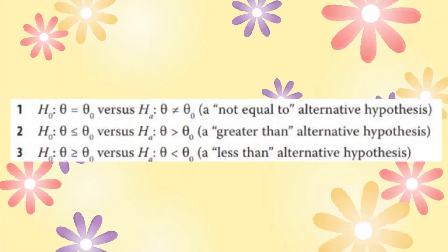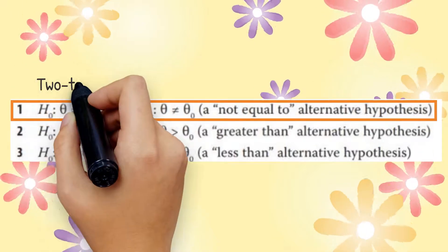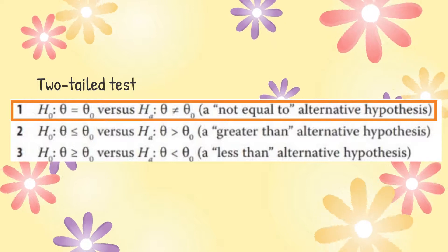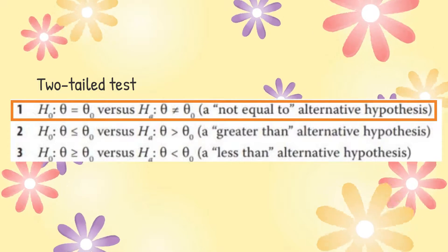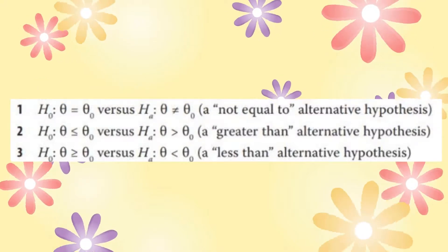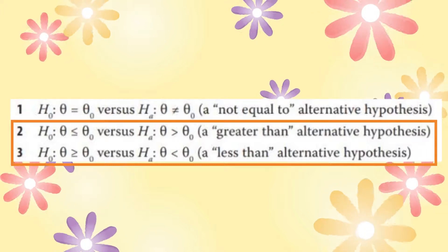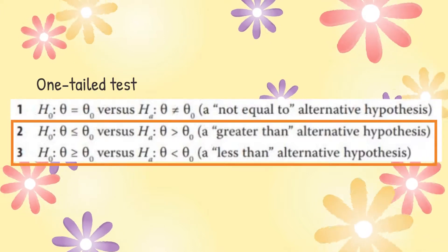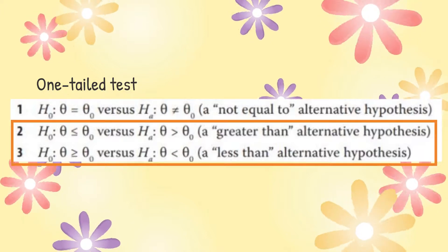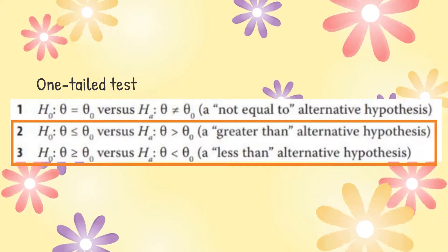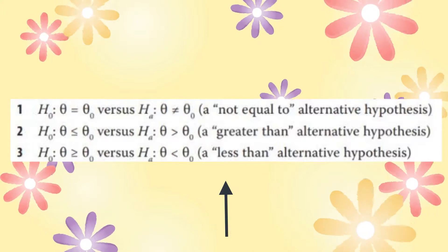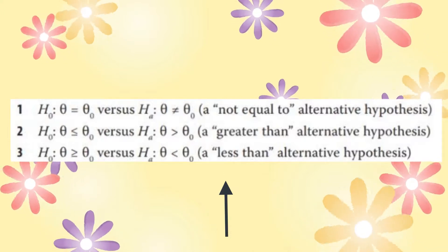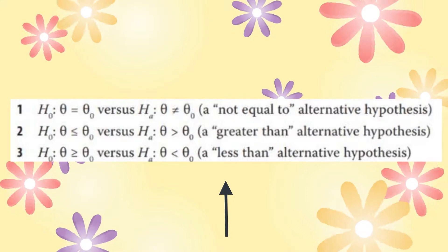We can formulate the null and alternative hypotheses in the following three ways. The first formulation is a two-sided hypothesis test or a two-tailed hypothesis test — we reject the null in favor of the alternative if the evidence indicates that the population parameter is either smaller or larger than theta 0. In contrast, formulations 2 and 3 are each a one-sided hypothesis test or a one-tailed hypothesis test, where we reject the null only if the evidence indicates that the population parameter is respectively greater than or less than theta 0. Notice that in each case, we state the null and alternative hypotheses such that together they account for all possible values of the parameter.